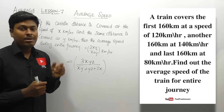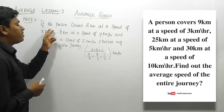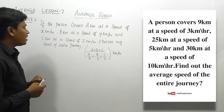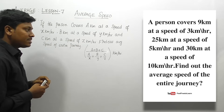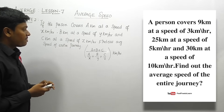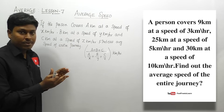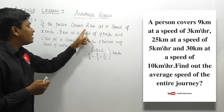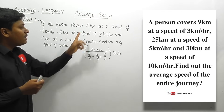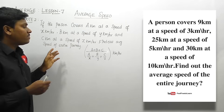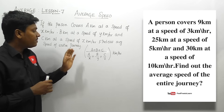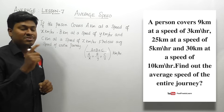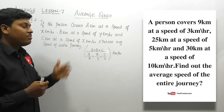Formula number two: if a person covers 'a' kilometers at x km/h, 'b' kilometers at y km/h, and 'c' kilometers at z km/h, find the average speed of the entire journey. Unlike formula one, here the distances are not the same in all three cases. When the distance is not the same across all cases, use the formula: (a + b + c) divided by (a/x + b/y + c/z).